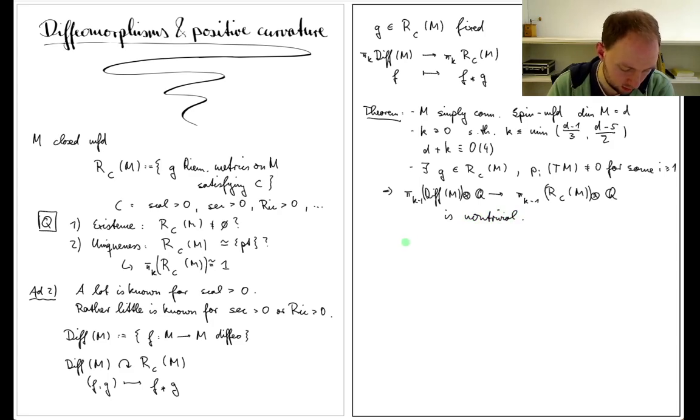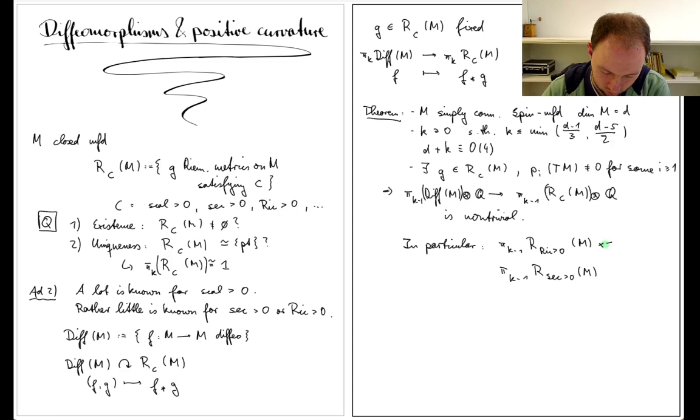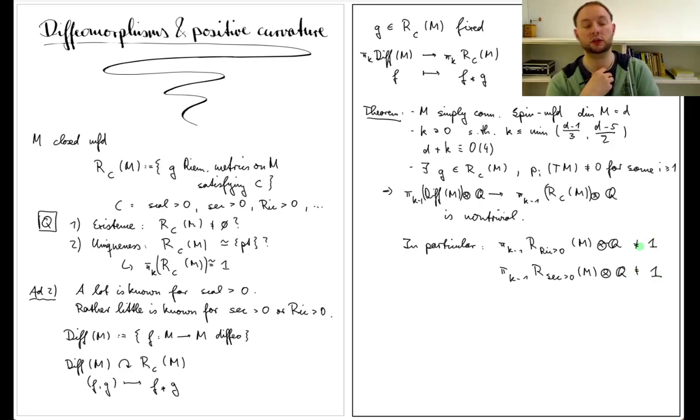In particular, this implies that π_{k-1} of the space of positive sectional curvature metrics and π_{k-1} of the space of positive Ricci curvature metrics on M are both non-trivial. One can even be more precise: there exists a homotopy group which contains an element of infinite order in these spaces. Thank you for watching.